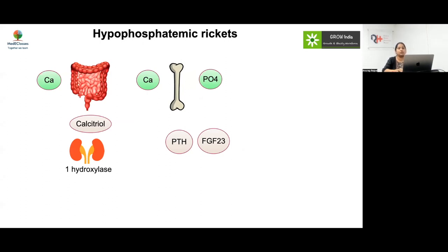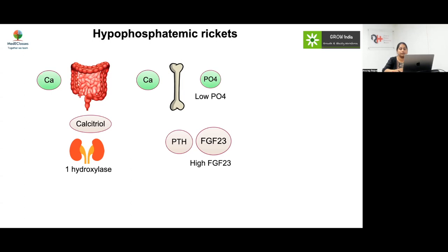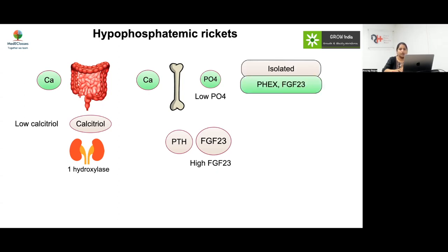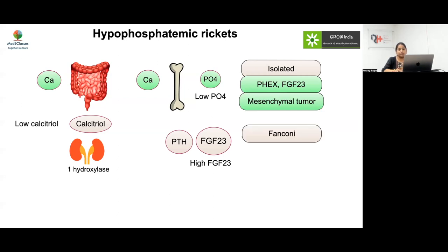In hypophosphatemic rickets, all forms of rickets generally have low phosphate except chronic kidney disease. The main abnormality is increased synthesis or decreased inactivation of FGF-23, a phosphaturic hormone that increases urinary phosphate excretion, causing low serum phosphate. FGF-23 also inhibits one-alpha hydroxylase, resulting in low calcitriol, which then decreases intestinal calcium absorption. This condition can present as isolated X-linked dominant (PHEX gene defect), associated with mesenchymal tumors, or with Fanconi syndrome.